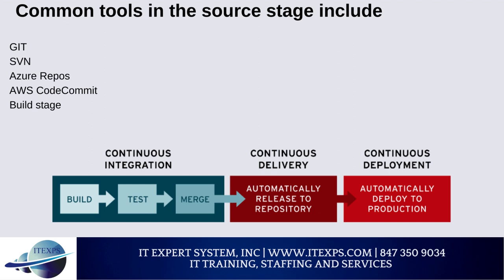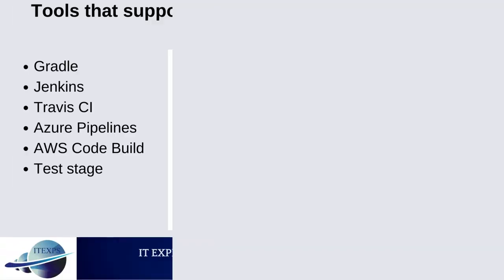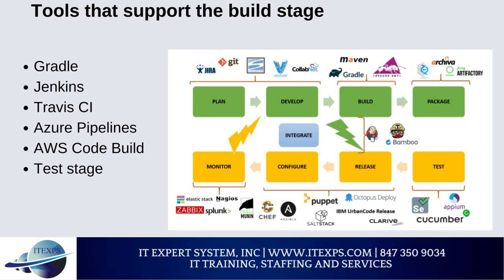The Build stage combines the source code with all its dependencies into an executable or runnable instance. It covers software builds and other buildable objects such as Docker containers. Failure in a build here could indicate a fundamental issue in the underlying code. This stage also includes build artifact handling — the storage process can be centralized using a repository like Yarn, JFrog, or a cloud-based solution such as Azure Artifacts, enabling rollback to a previous build if needed. Tools supporting the build stage include Gradle, Jenkins, Travis CI, Azure Pipelines, and AWS CodeBuild.